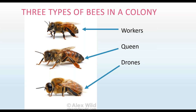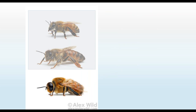Workers and queens are females of different castes, and even within workers there are different castes depending on whether they're a summer or winter worker. Drones are the males and serve only a reproductive role—they are essentially carriers of the queen's genetics. Drones have no father; the queen lays an unfertilized egg with one set of genes that becomes a drone. If she's laying a worker, she lays a fertilized egg containing her genes plus the genes of whichever drone she mated with.